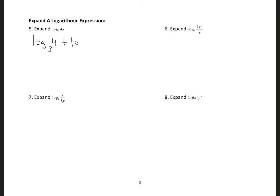Now we continue applying the properties of logarithms — expanding. So I'm going to do logarithm to base 3 of 4 plus, because I'm multiplying, logarithm to base 3 of x. For number 6, I'm dividing, so logarithm to base 3 of 7 plus — using the power property for the exponent 2 — 2 times logarithm to base 3 of x, minus logarithm to base 3 of y.